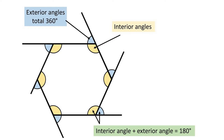First of all, what is an exterior angle and an interior angle? This diagram can help explain. In a regular polygon — which just means a polygon with all equal sides and equal angles — the exterior angle is the angle facing outwards on the outside of the polygon if you draw a straight line through one of its sides. The interior angle is the angle on the inside. All the interior angles will be the same and all the exterior angles will be the same.